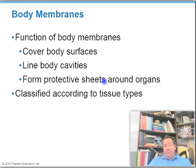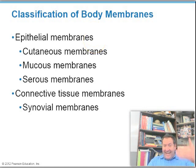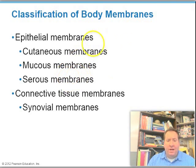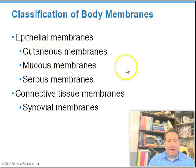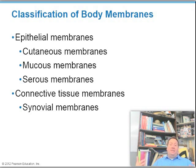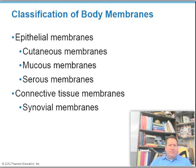An epithelial membrane has both connective tissue and epithelial tissue in it, whereas a connective tissue membrane has just connective tissue. The major epithelial membranes are the cutaneous membrane, the mucous membrane, and the serous membrane. The major connective tissue membrane is the synovial membrane. On your test, you can expect questions like which of the following is classified as an epithelial membrane, or which is not.